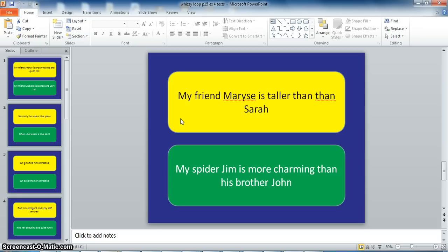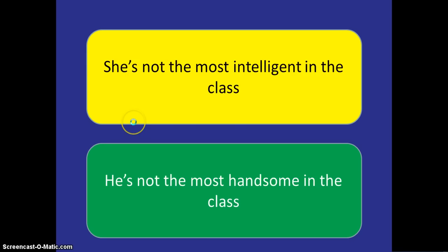Firstly, what's in front of us here is something which I call a whizzy loop activity. It's essentially a PowerPoint presentation which has come from a teach meet organised locally, and I've just taken the file and adapted it. Essentially it runs on a loop so that each slide moves on to the next slide very rapidly, and when it gets to the end it just loops around and does it all over again, as you will see when I press the F5 button.